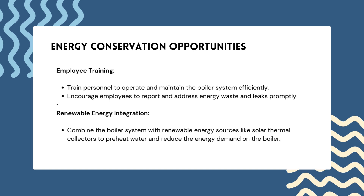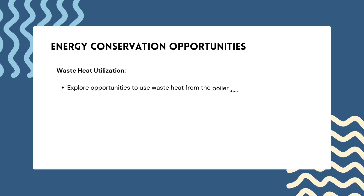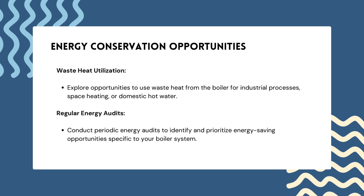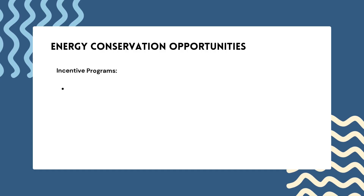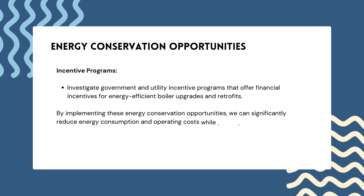Tenth, renewable energy integration: combine the boiler system with renewable energy sources like solar thermal collectors to preheat water and reduce energy demand on the boiler. Eleventh, waste heat utilization: explore opportunities to use waste heat from the boiler for industrial processes, space heating or domestic hot water. Twelfth, regular energy audits: conduct periodic energy audits to identify and prioritize energy saving opportunities specific to your boiler system. Thirteenth, incentive programs: investigate government and utility incentive programs that offer financial incentives for energy-efficient boiler upgrades and retrofits. By implementing these energy conservation opportunities, you can significantly reduce energy consumption and operating cost while improving the environmental sustainability of your boiler system.